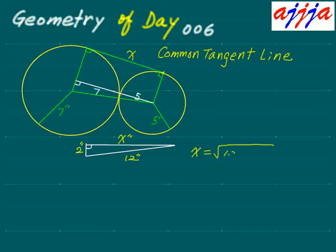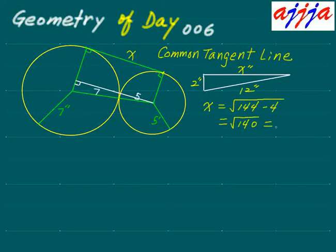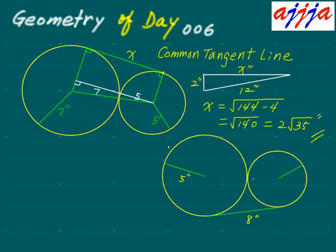By the Pythagorean theorem: x equals the square root of 12 squared minus 2 squared, which is 144 minus 4, equals 140. So x equals the square root of 140, which is 4 times 35. Taking the square root of 4 out gives us 2√35 inches. That's the answer.